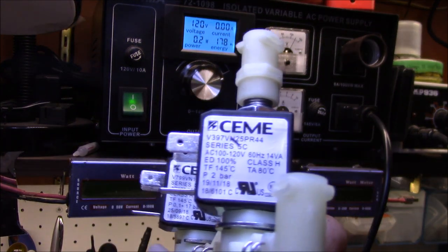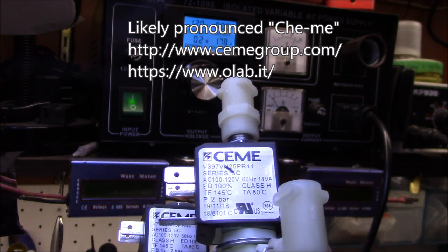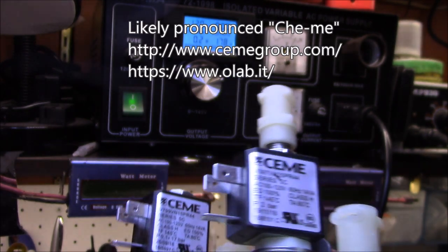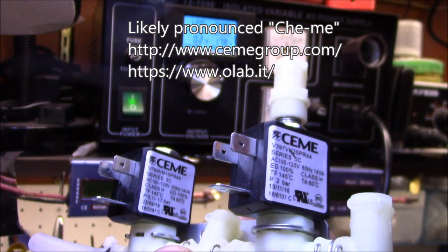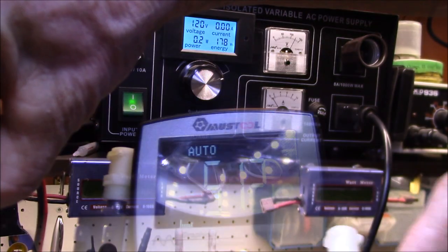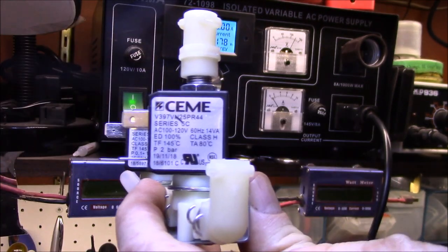So this is the new solenoid block that I just got, and they use a different brand of solenoid. It's a CEME, C-E-M-E. They're both Italian companies, and I'll put links to the web pages in the video description. Until it settles down, there's 512 ohms.